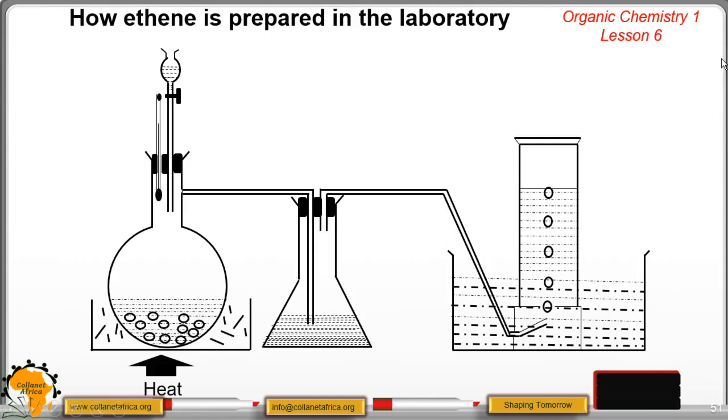Hello ColorNet Africa Online students. Welcome to our lesson 6 of Organic Chemistry 1. In this lesson, we shall continue discussing ethene. Remember last time we started our discussion on ethene? So, it's a continuation of last lesson.